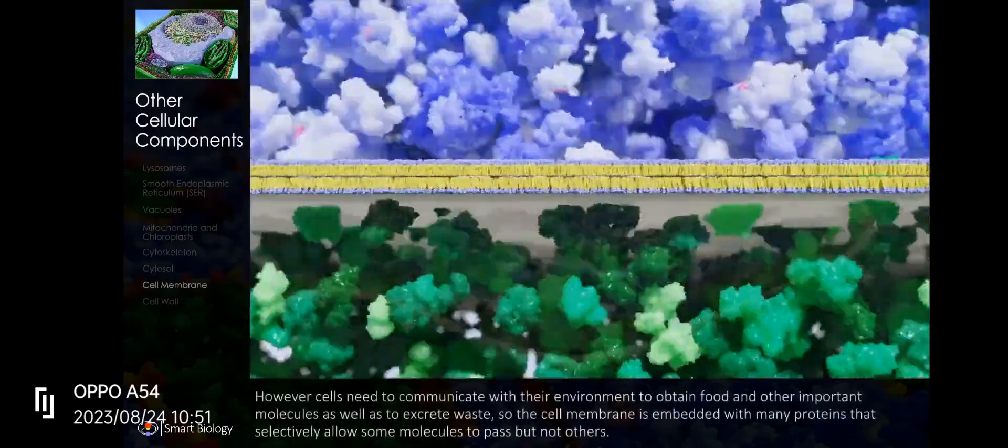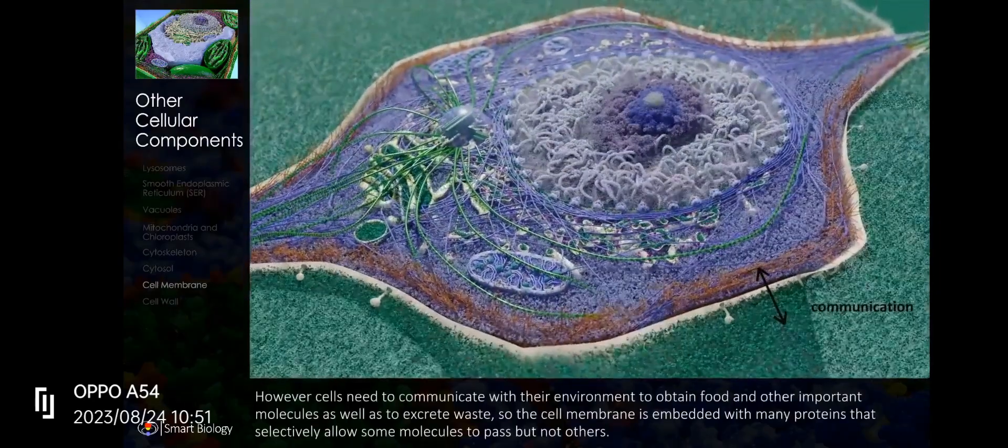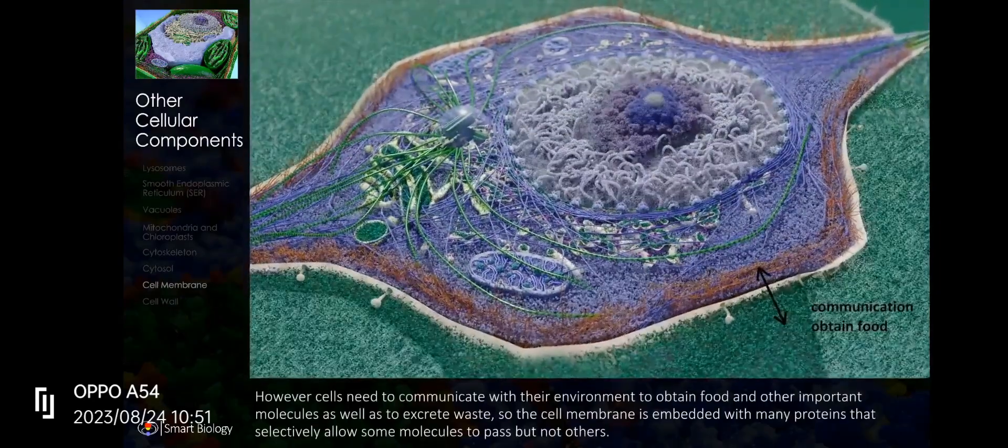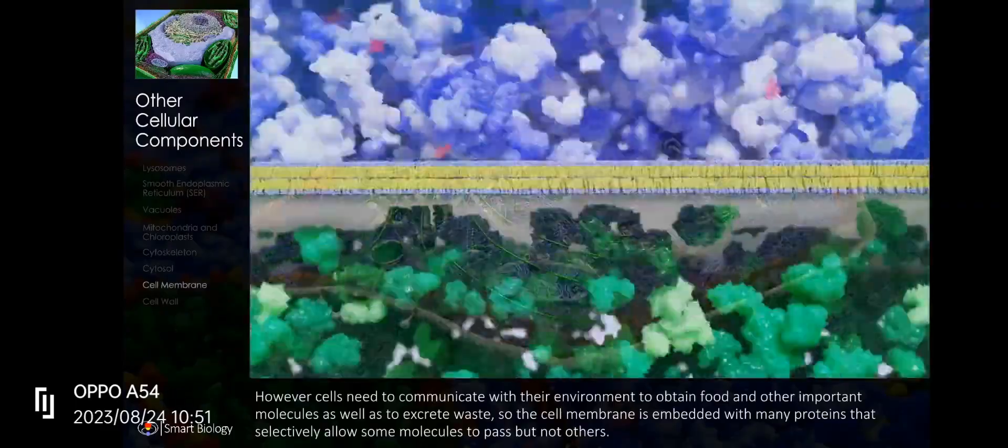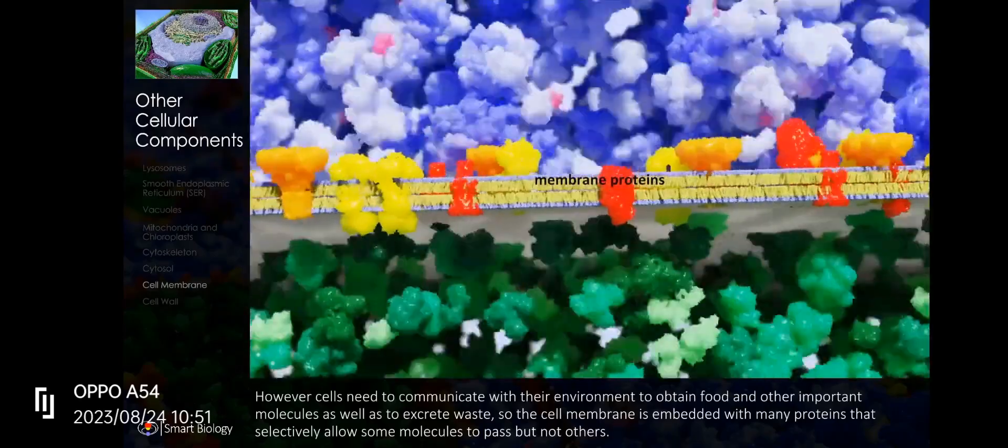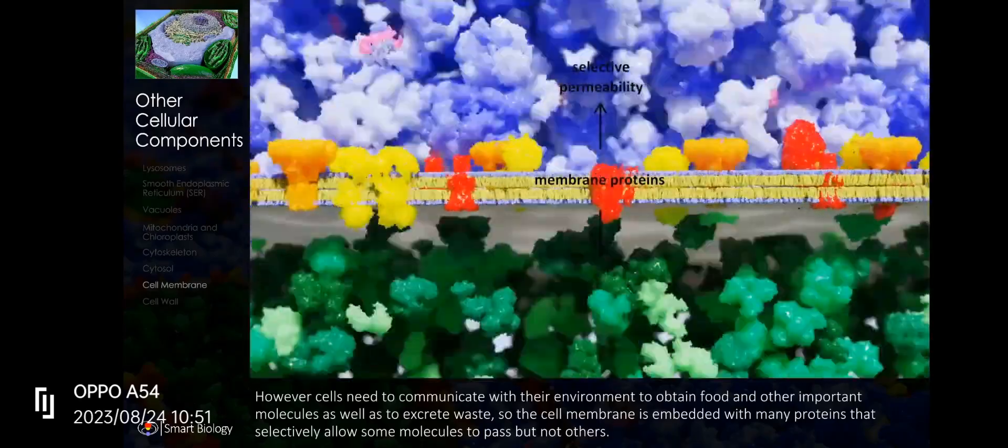However, cells need to communicate with their environment to obtain food and other important molecules, as well as to excrete waste, so the cell membrane is embedded with many proteins that selectively allow some molecules to pass but not others.